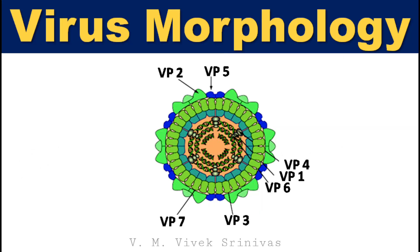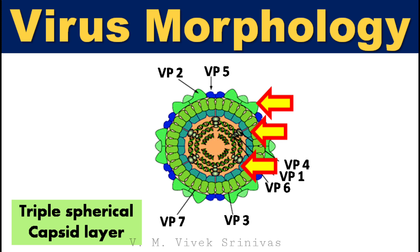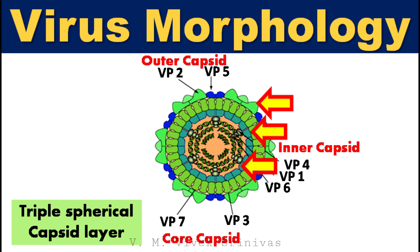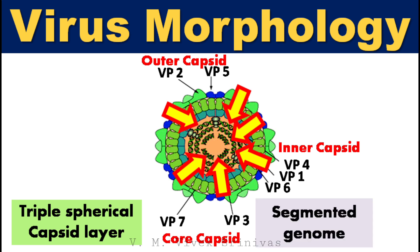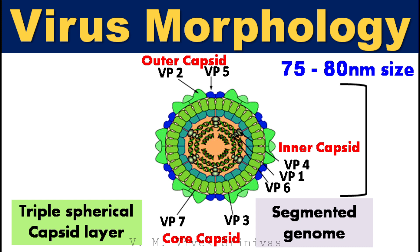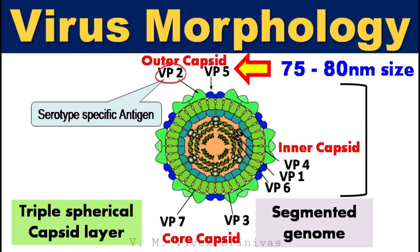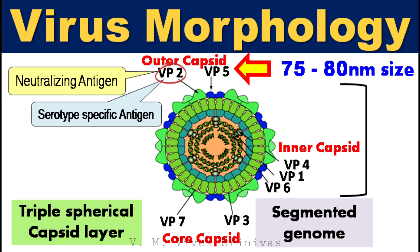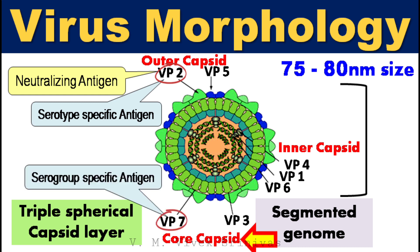Virus morphology. This virus possesses a triple spherical capsid layered one over the other — outer capsid, core capsid, and inner capsid — which encases the segmented genome. This segmentation may lead to genetic reassortment. The entire virus is about 75 to 80 nanometers in diameter. VP2 and VP5 code for the outer capsid; VP2 is a serotype-specific antigen and plays a major role in antigenicity as the virus-neutralizing antigen. VP3 and VP7 code for the core capsid; VP7 is a group-specific antigen. VP1, VP4, and VP6 code for the inner capsid.